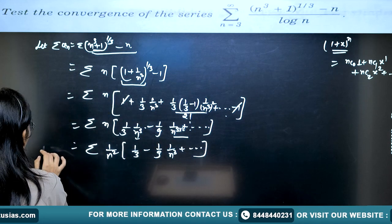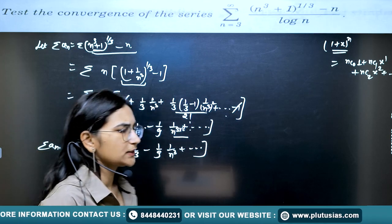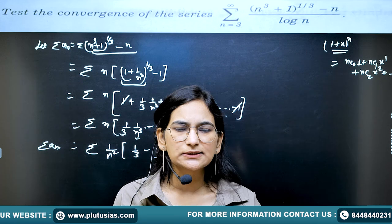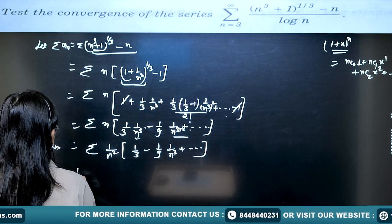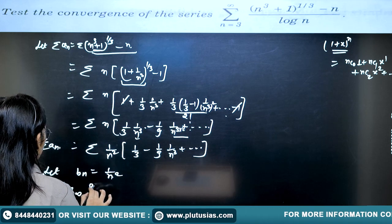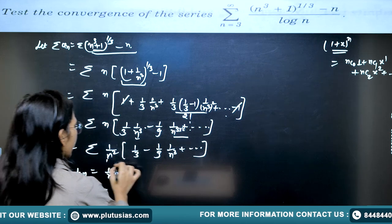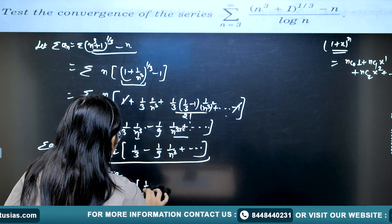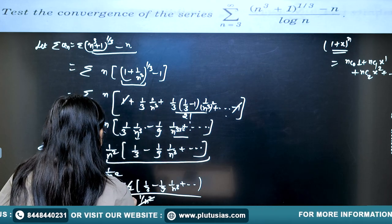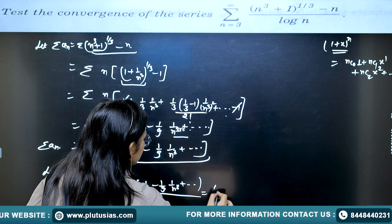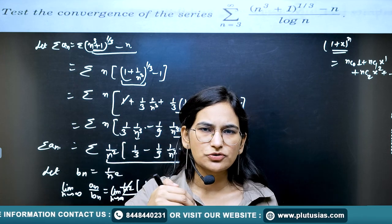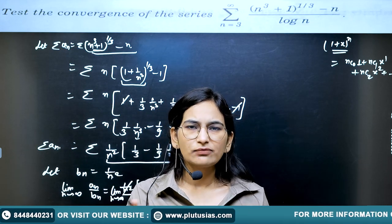Now we need to show whether this series is convergent. We apply the comparison test. Let bₙ' = 1/n². We find the limit as n → ∞ of aₙ / bₙ'. With aₙ ~ (1/n²)(1/3 − (1/9)(1/n) + …) and bₙ' = 1/n², the limit equals 1/3, which is a non-zero finite number. The comparison test states that if this limit is non-zero finite, aₙ and bₙ' behave in a similar manner.